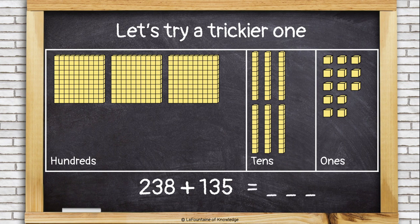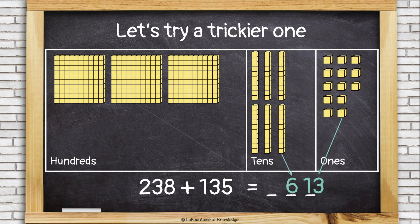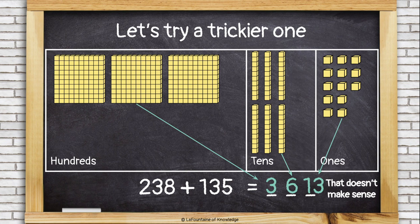All right, let's figure out what number this is. I have 13 ones, 6 tens, and 3 hundreds. Hmm, that doesn't really make sense. I can't put a 13 in the ones place of my answer.